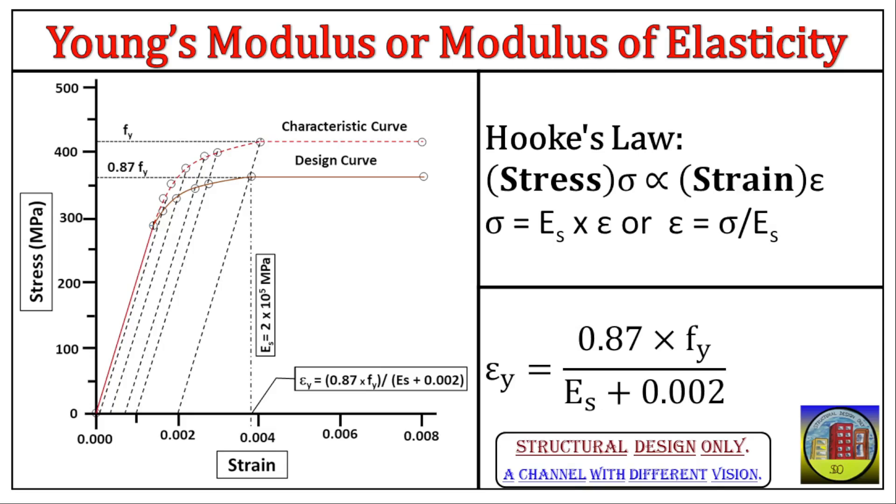FY, yield stress - this represents the maximum stress the steel can handle before it starts to deform permanently. It's like a limit for steel's elasticity. Imagine stretching the rod, the yield stress is the point where it can't spring back to its original shape if stretched further.